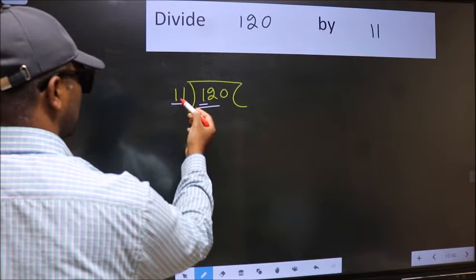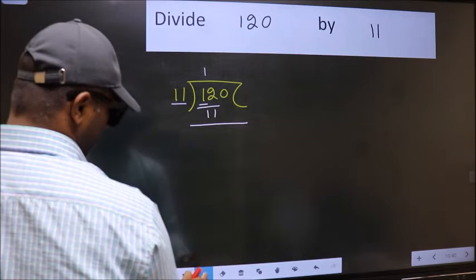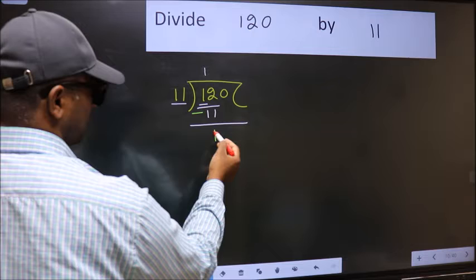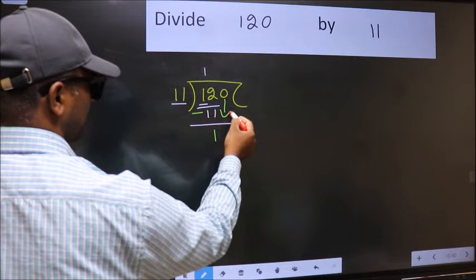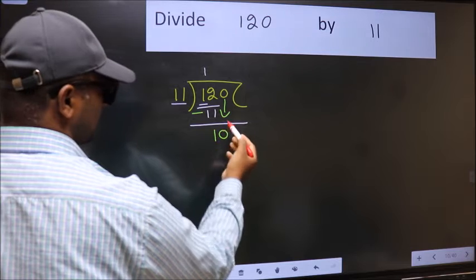A number close to 12 in 11 table is 11 once 11. Now you should subtract. 12 minus 11, 1. After this, bring down the beside number. So 0 down.